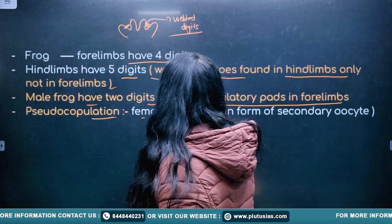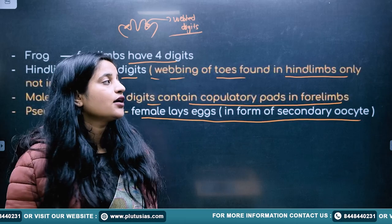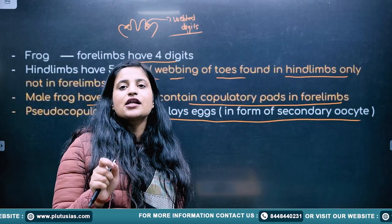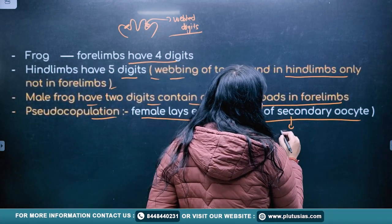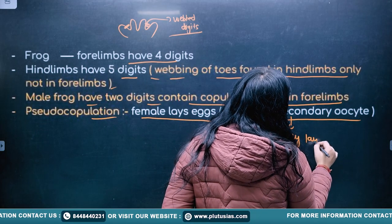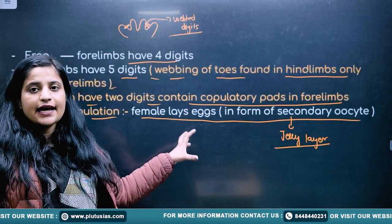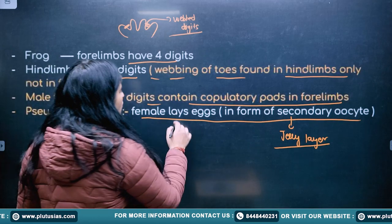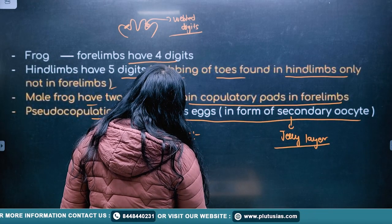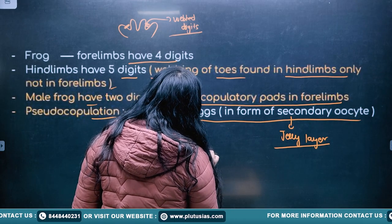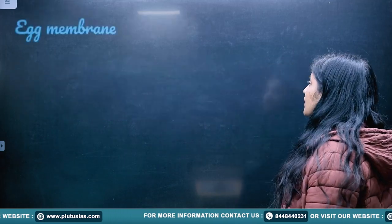The female lays eggs in the form of a secondary oocyte. Around the secondary oocyte there is a presence of a jelly layer. The process of females laying eggs is known as spawning. Spawning means egg laying.